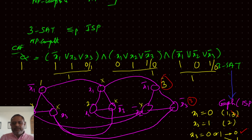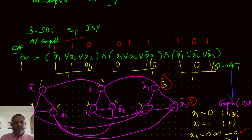With X1=0, X2=1, X3=0: X1-bar=1, X2=1, X3-bar=1, X1-bar=1, X2-bar=0, X3-bar=1. Clause 1 is 1, clause 2 is 1, clause 3 is 1. Therefore 1 AND 1 AND 1 confirms the total 3SAT CNF problem is also true.